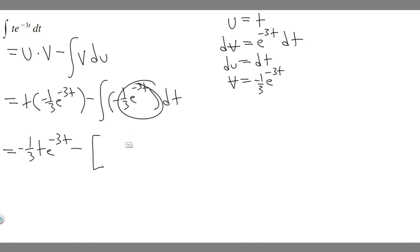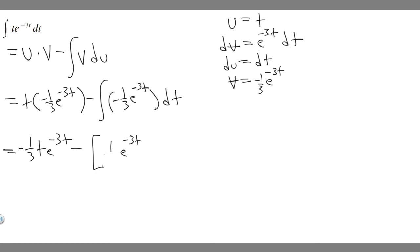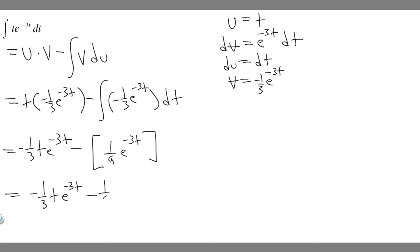Think about it just like the last one. The e to the minus 3t stays the same, and we need some number multiplied by minus 3 to equal minus 1 over 3. If we use 1 over 9, then minus 3 times 1 over 9 is minus 1 over 3 — so the integral of minus 1 over 3 e to the minus 3t dt is 1 over 9 e to the minus 3t. Rewriting, we get minus 1 over 3 t e to the minus 3t minus 1 over 9 e to the minus 3t. Remember, whenever you take an integral you have to add a constant, so plus C.